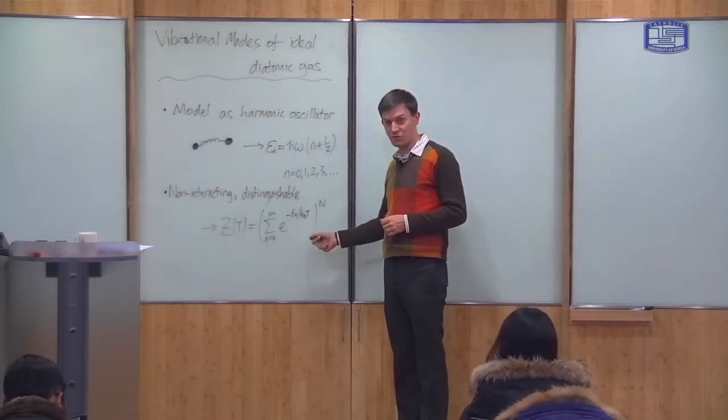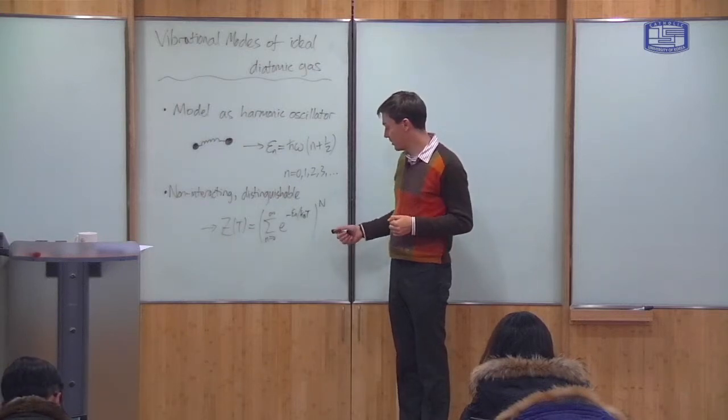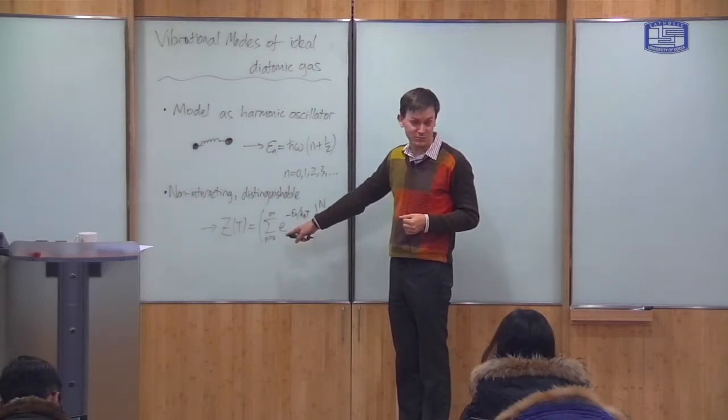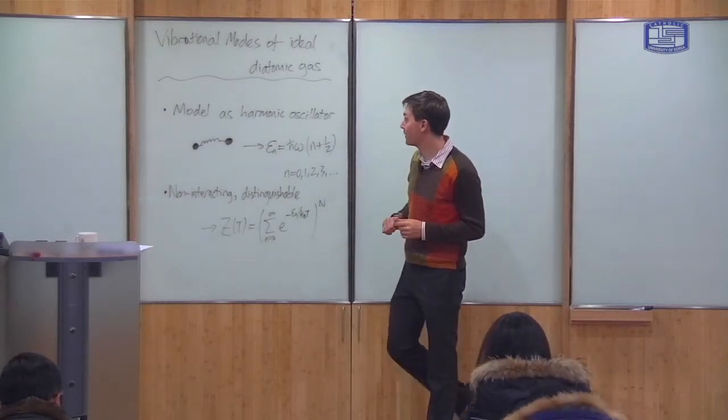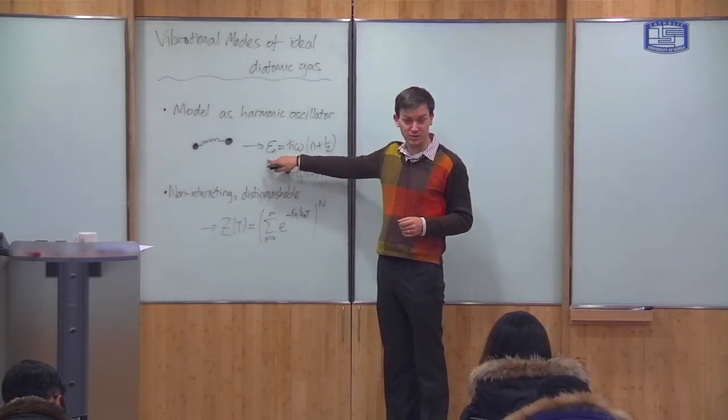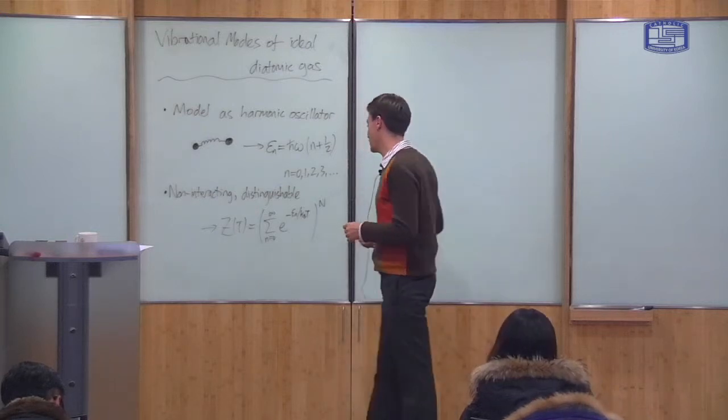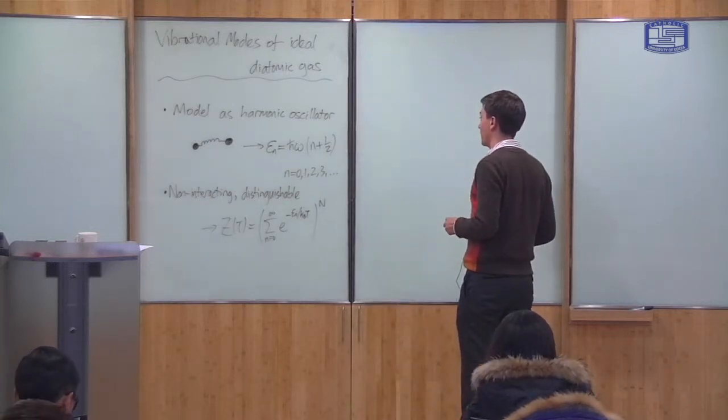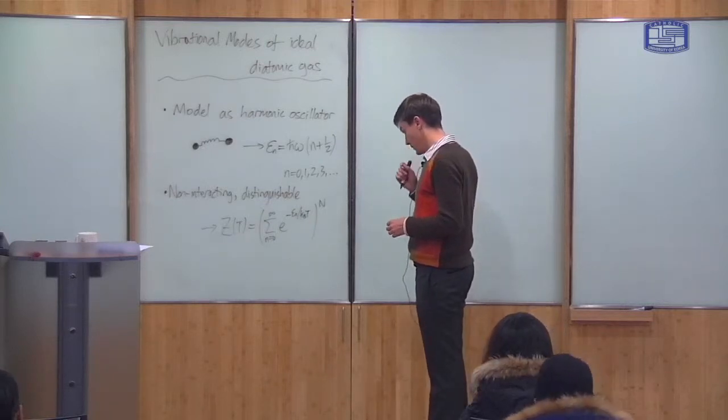So we got a similar formula when we looked at the rotational modes. In the rotational modes, we had to do a density of states approximation at this point. But it turns out that for this epsilon_n, the sum is possible. So here we can calculate exactly without having to make a density of states approximation.